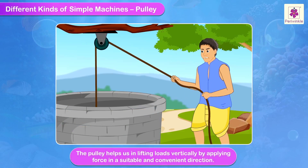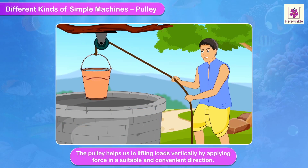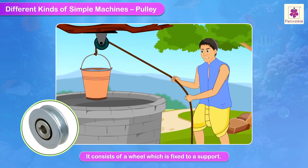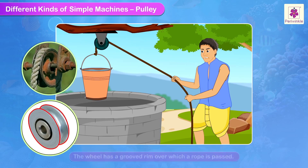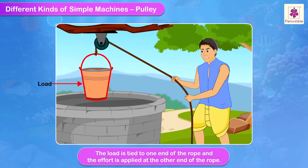Pulley. The pulley helps us in lifting loads vertically by applying force in a suitable and convenient direction. It consists of a wheel which is fixed to a support. The wheel has a grooved rim over which a rope is passed. The load is tied to one end of the rope and the effort is applied at the other end of the rope.